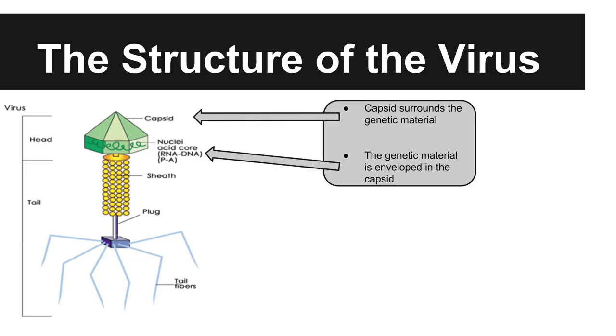In addition to having a capsid and genetic material within the structure of a virus, viruses have a head, tail, sheath, plug, and tail fibers.